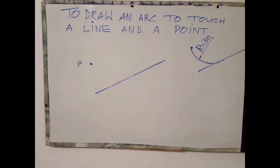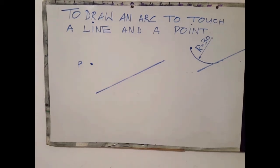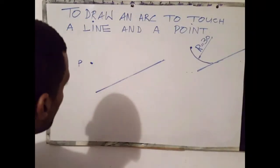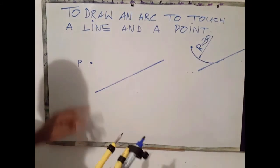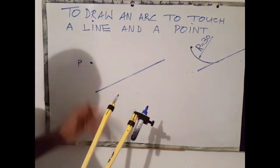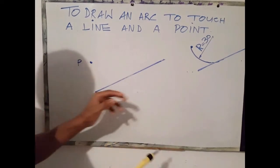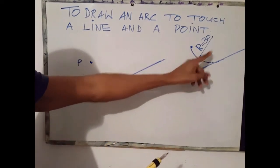The first step to draw an arc to blend with a line and also to touch a point P is to open your compass to the given radius. In this case the radius is 30.